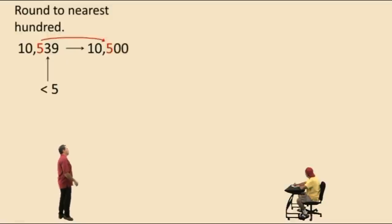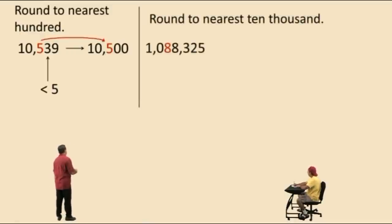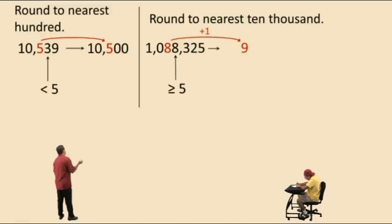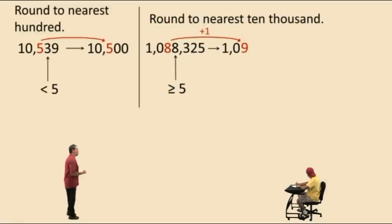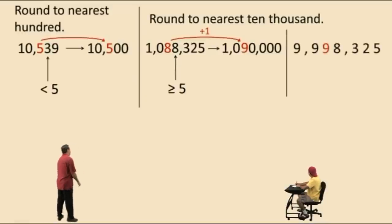Now let's round to the nearest ten thousand. Here's the number one million, eighty-eight thousand, three hundred twenty-five. Notice the red 8 is in the ten-thousands place. We go to the right and see an 8 — that's greater than or equal to five — so we increase that 8 by one, making it a 9. The digits in front we bring over, and all the place values to the right we replace with zeros. Answer: one million, ninety thousand.